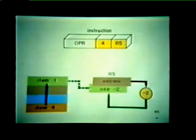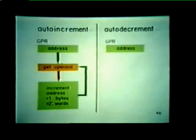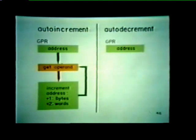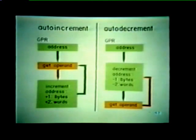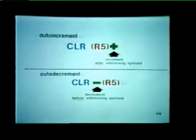Let's compare the auto-decrement and the auto-increment modes. Both modes modify an address stored in one of our GPRs. With auto-increment, we first use the address to locate the operand, then the address is incremented to reference the next operand — by 1 if operands are bytes, by 2 if they are full words. With auto-decrement, the address stored in the GPR is first decremented by 1 or by 2, and then the decremented address is used to locate the operand. Notice the placement of the plus and minus signs in the symbols: the auto-increment symbol indicates the contents of the register are incremented after being used as the address of the operand.